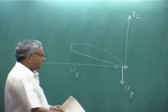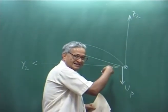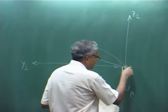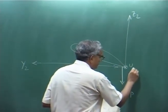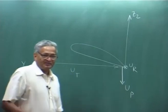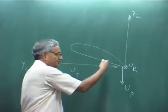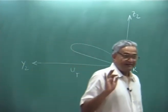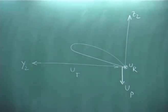Then there is u_r — that is the radial velocity. I will put a circle here: it is u_r, velocity going into the blade. All are air velocities.